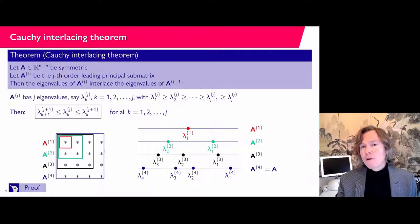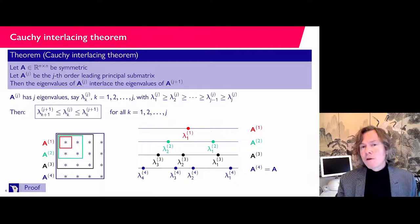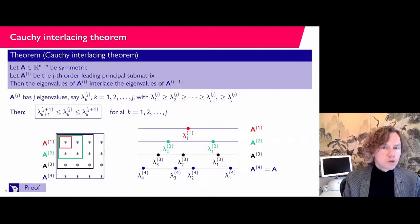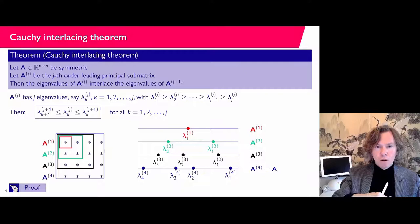With Courant-Fisher we have sufficient information to prove this. If I show it for j and j+1, then I'm done. To make notation easier, I'll show it for the full matrix A and the (n−1)×(n−1) upper left block — that corresponds to the last step in the picture. So let's try to prove this.